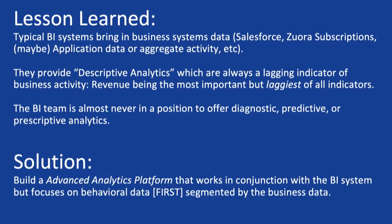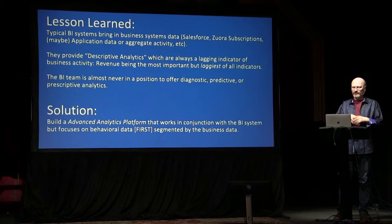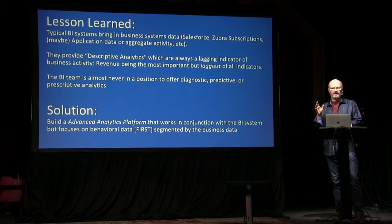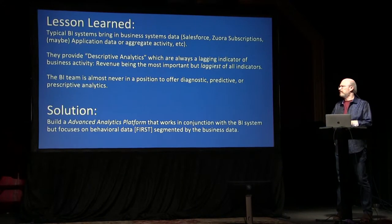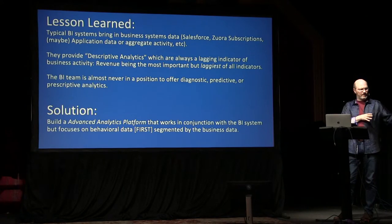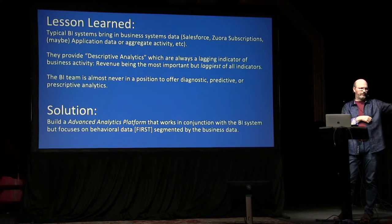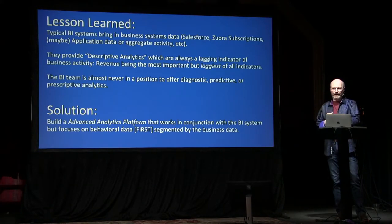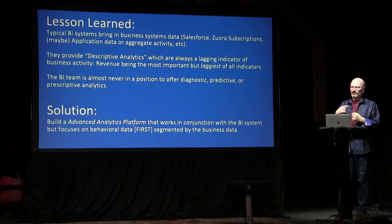Lessons learned here: typical BI systems bring in Salesforce data, Zuora data, maybe application data, or aggregate activity — counts of usage by day, counts of logins by day. These BI systems typically do descriptive analytics that are always a lagging indicator of business activity. Revenue is the laggiest of all indicators, because revenue for that quarter was comprised of activities that may have spanned multiple years — multiple years of developing that relationship with that customer. BI systems are always lagging, and because of the way you set up a BI data warehouse, it's never in a position to do diagnostic, predictive, or prescriptive analytics.